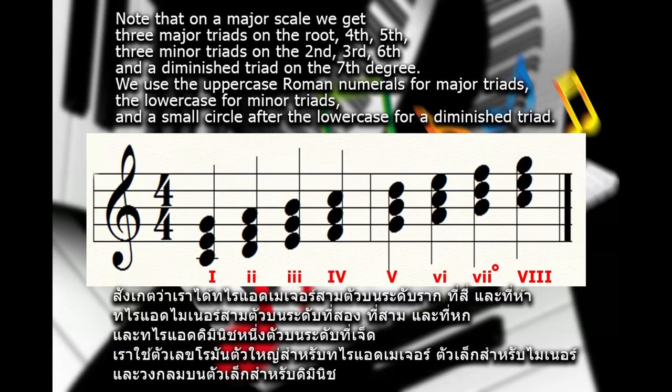We use the uppercase Roman numerals for major triads, the lowercase for minor triads, and a small circle after the lowercase for a diminished triad.